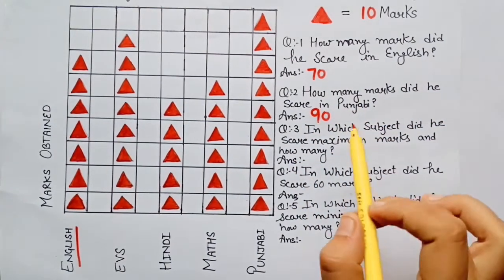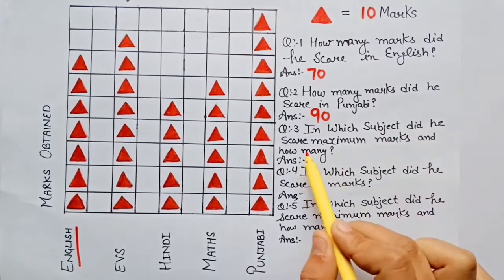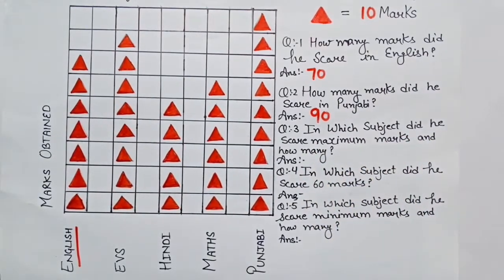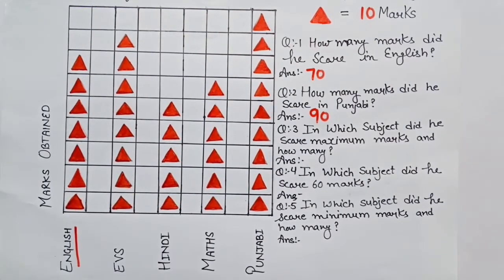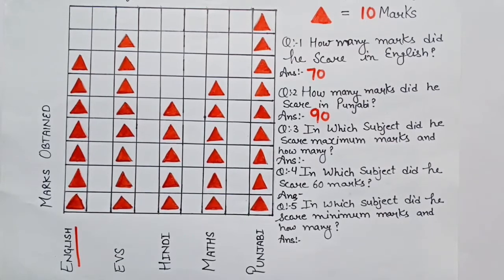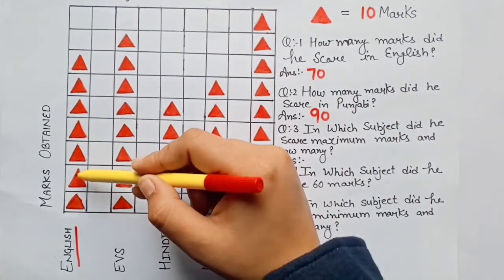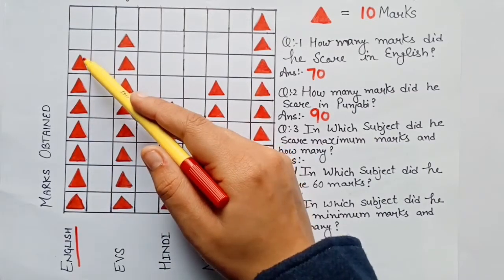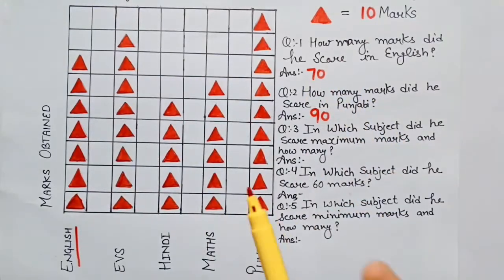The next question is: in which subject did he score maximum marks and how many? Ab humein batana hai ki Rahul ne sabse zyada marks kis subject mein liye hain? Let's compare. In English there are 7 triangles — usne English mein 70 marks liye hain.